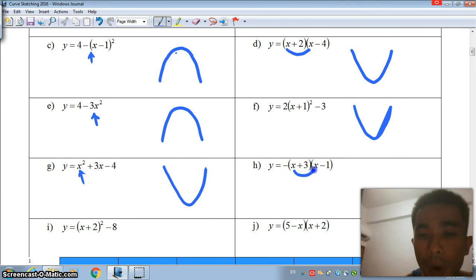X times x will give you x-square. Multiply by a negative 1 outside, you get a negative x-square. So, in other words, you will get an n-shape.